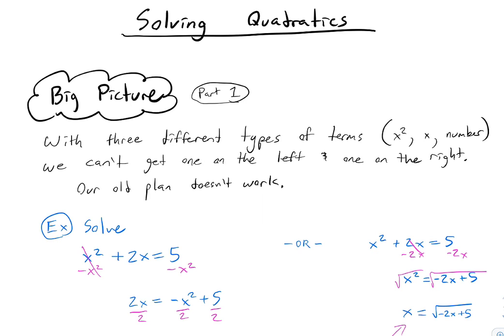In algebra, we basically have two plans. We're able to solve something like 2x plus 5 equals 3x minus 2x plus 1 minus 10 because we just put all our x's on one side, equal to our numbers on the other side, and then divide by the number of x's. If this was 3x, we divide by 3, and we get x equals a number. That's our big plan so far.